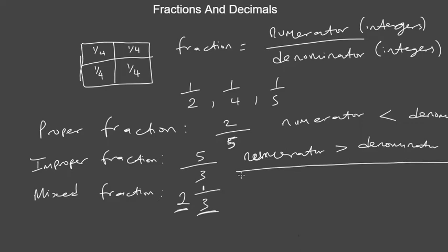An improper fraction can be converted into a mixed fraction. For example, we can convert 5 over 3 by asking how many 3s can we find in 5. We can only get one 3 out of 5, and if you take that away, you're left with 2 over 3. So 5 over 3 becomes 1 and 2 over 3.